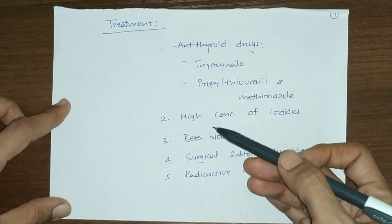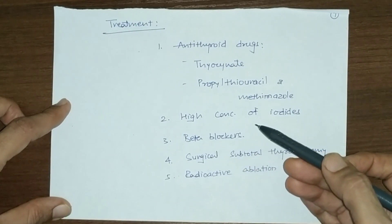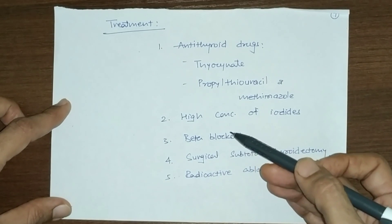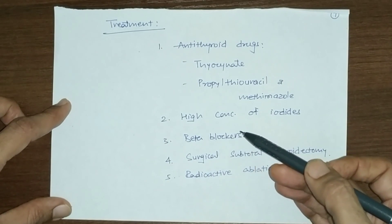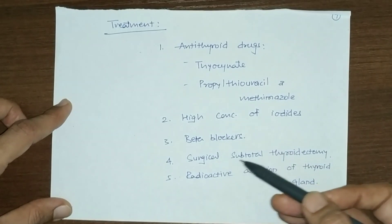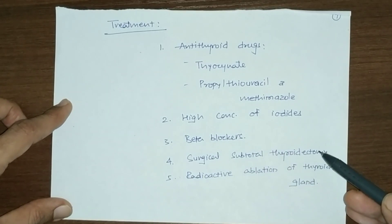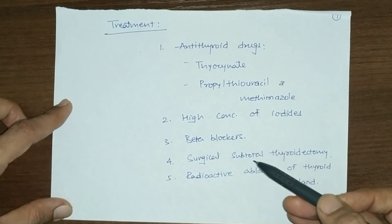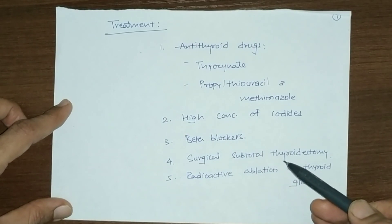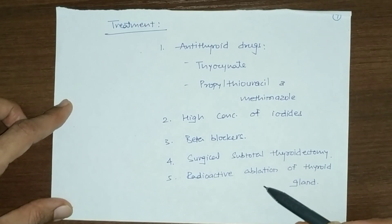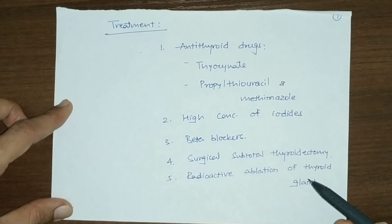Other treatment options include high concentration of iodide administration, beta blockers for symptomatic relief, surgical subtotal thyroidectomy where the thyroid gland is removed, and radioactive ablation of the thyroid gland.